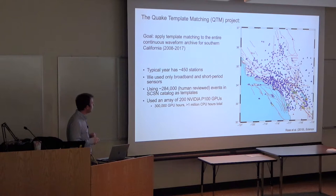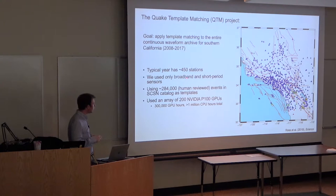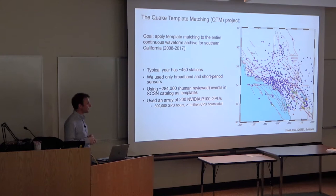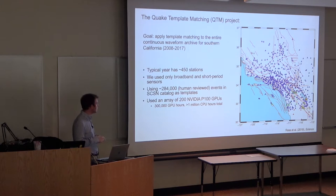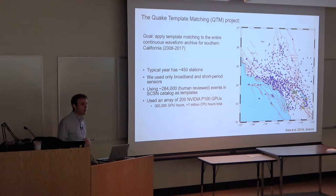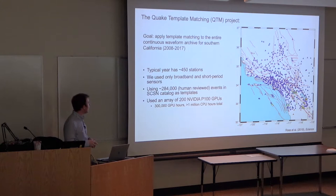A typical year of our dataset has 450 seismic stations, fluctuating over time. We used only broadband and short-period sensors, and 284,000 events manually reviewed by humans over the last 20 years as template waveforms. To do these calculations we used an array of 200 NVIDIA P100 GPUs for about 300,000 GPU hours plus another similar number of CPU hours over many iterations. This was a major supercomputing effort - it's surprising it all came together.